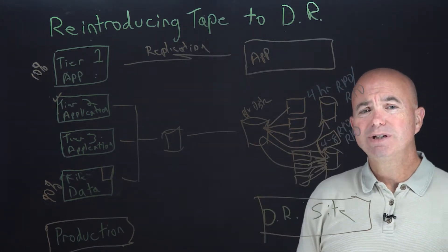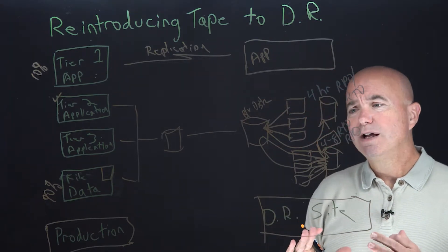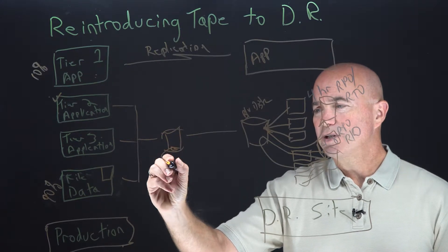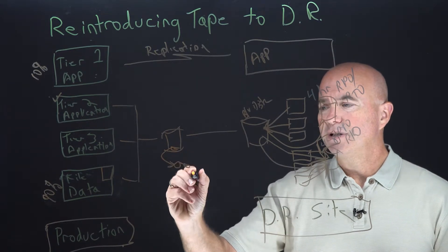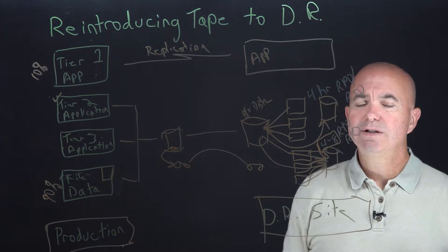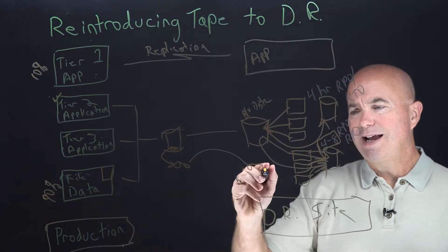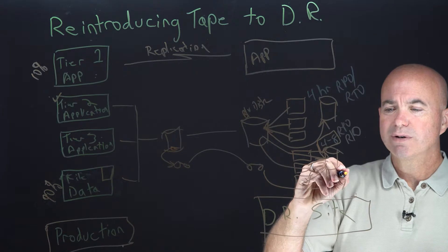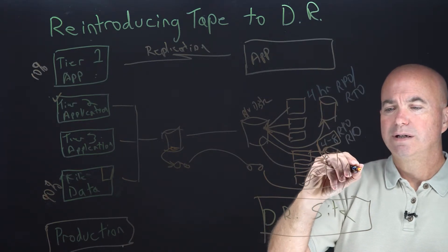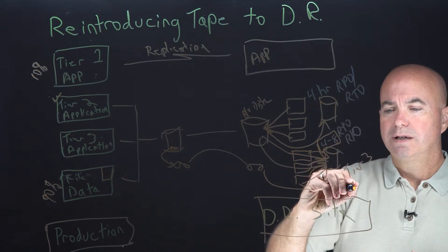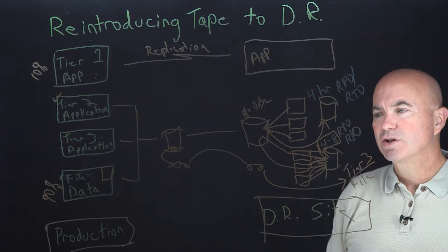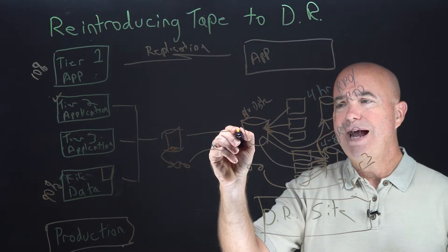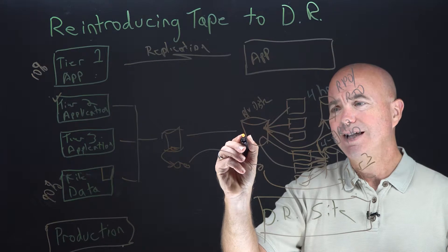If you look at the timeframe on this tier three application set of four to eight hours, that's something that tape could easily meet. What we could do is, as in our last video, we showed data spooling off to tape. Those tapes could be shipped to the DR site. In this scenario, I could actually start my tier three and my unstructured data recovery all from tape. Tier three and files could all come from tape.